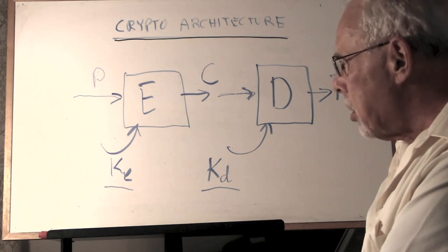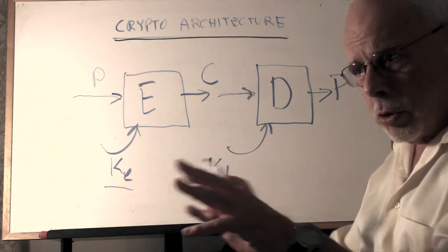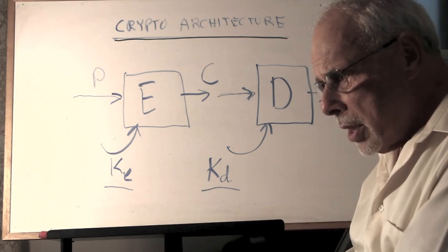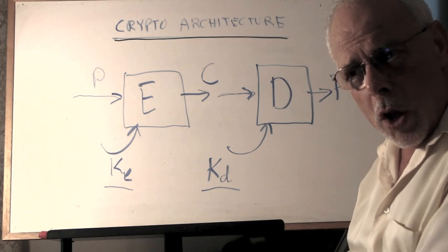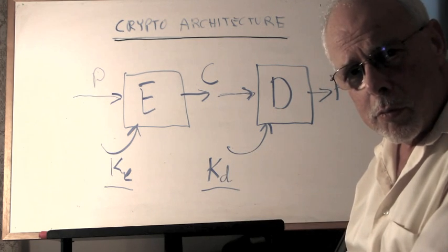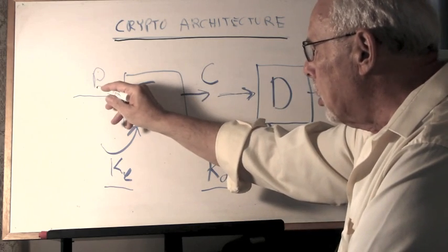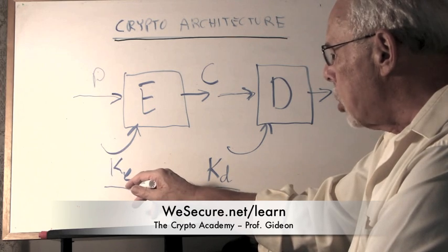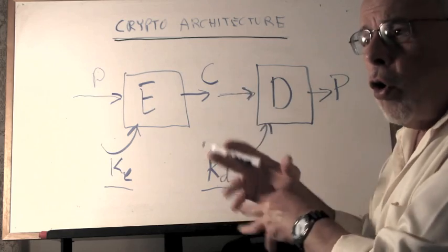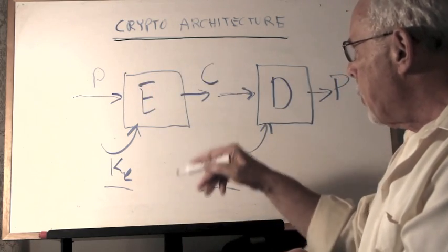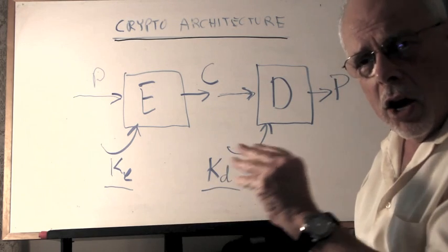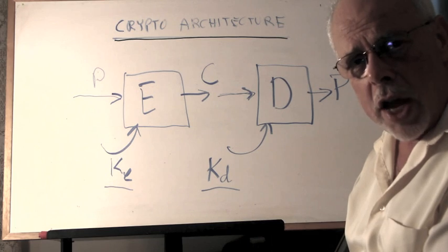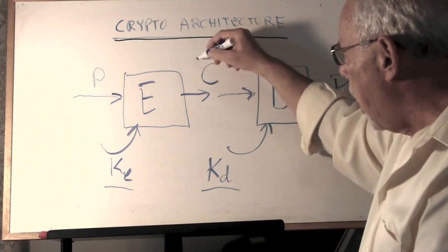Now if we envision Alice and Bob, who are the good guys trying to keep a secret—Alice wants to send Bob a secret—and across them sits the hacker, the attacker, the adversary who tries to discover the secret. Alice will write her secret in P, use the encryption key that she has to create the ciphertext that corresponds to the plaintext, take the ciphertext and send it out over an insecure channel to Bob. Now because it's over an insecure channel, the hacker, the adversary, can monitor it. The hacker reads C.